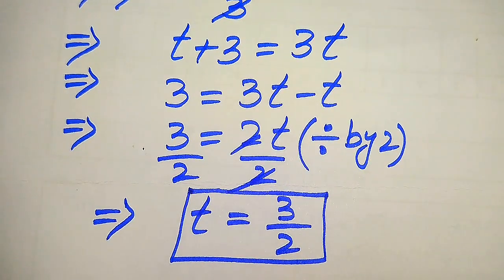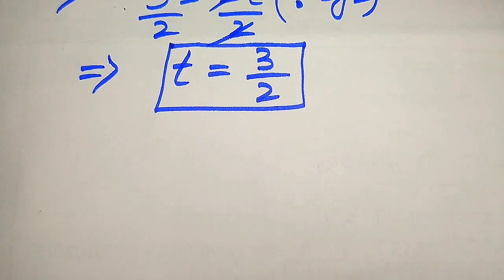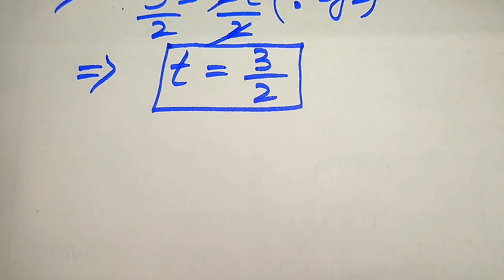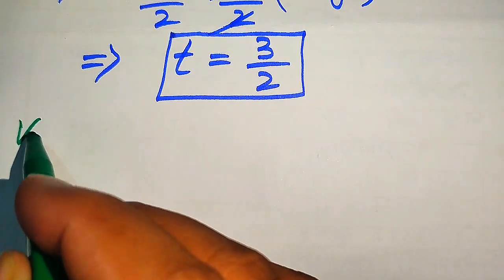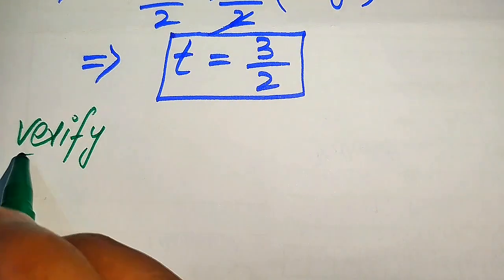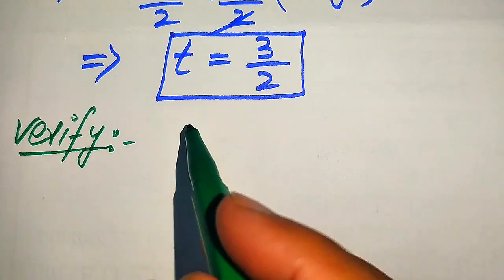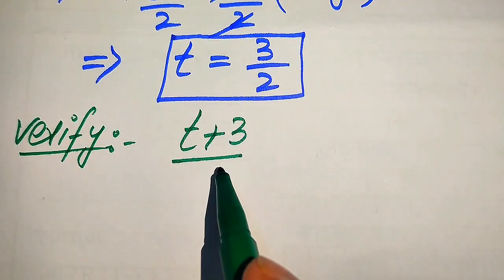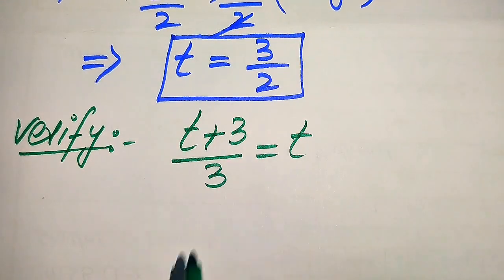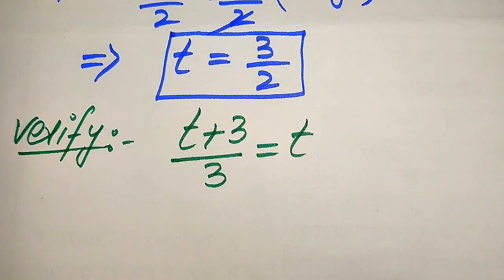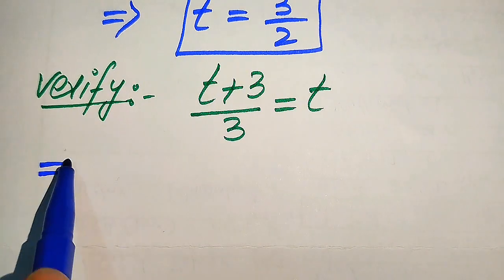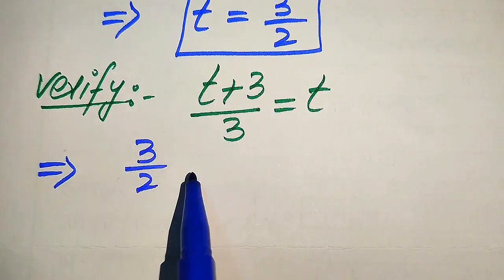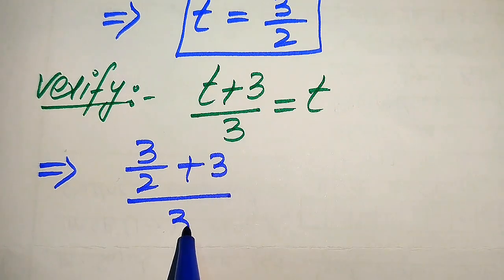This is the one root of the given equation. Now we need to verify this value of t and check whether it satisfies our given question statement. We copy down the given equation: t plus 3 divided by 3 equals t. We substitute t equals 3 over 2 on both sides, giving us (3/2 plus 3) divided by 3 equals 3 over 2.